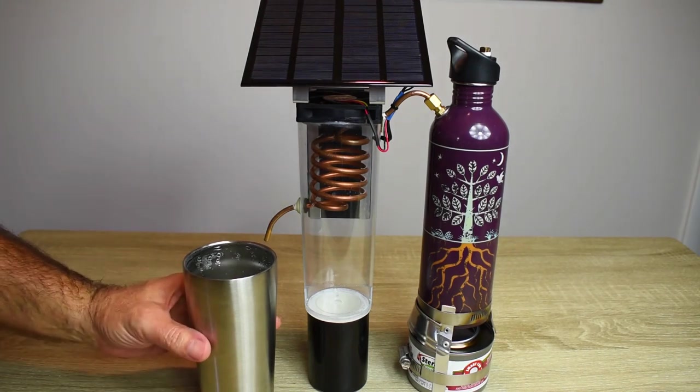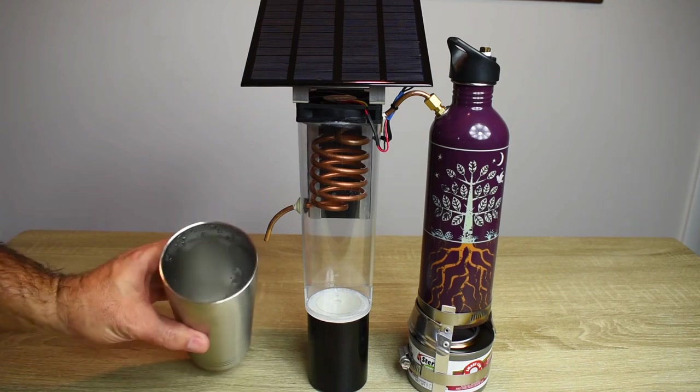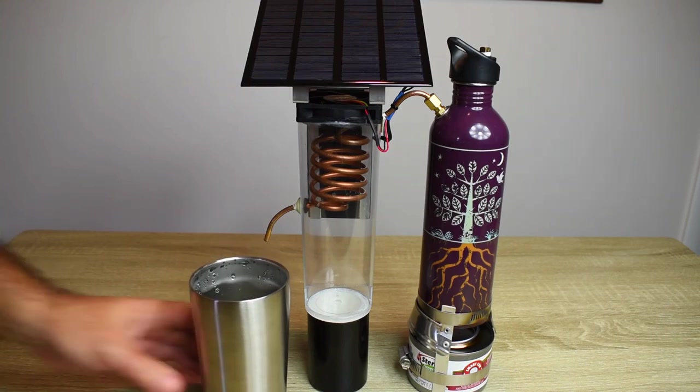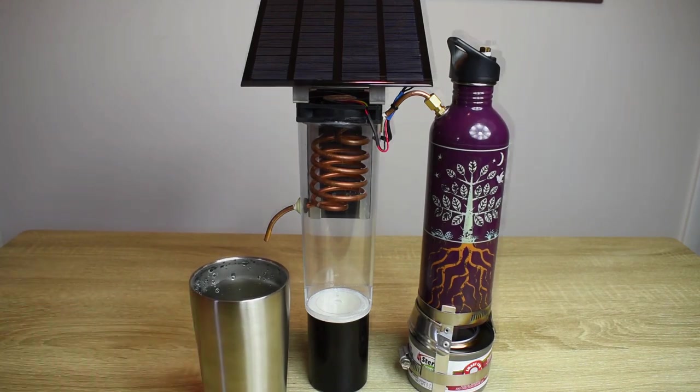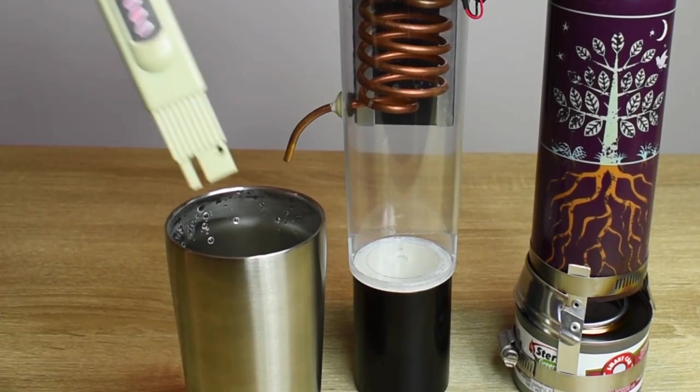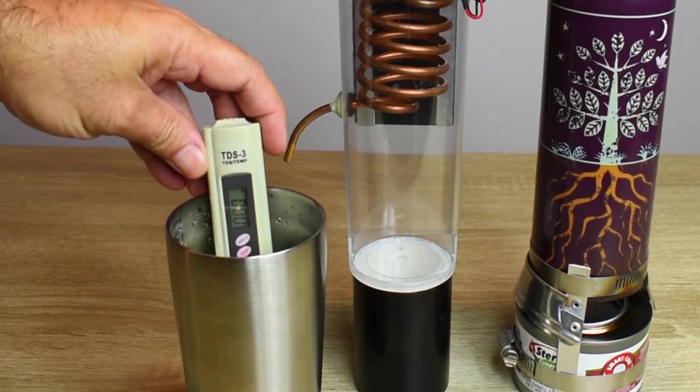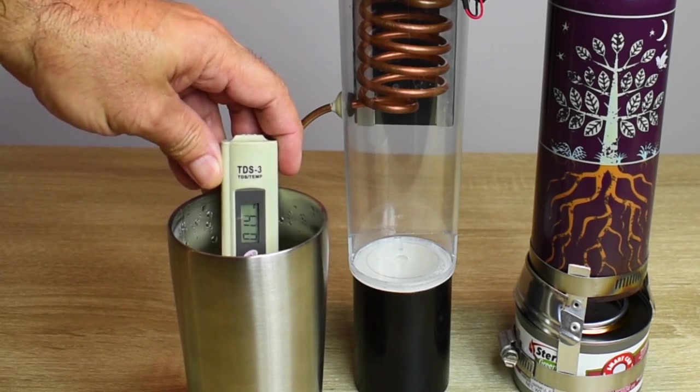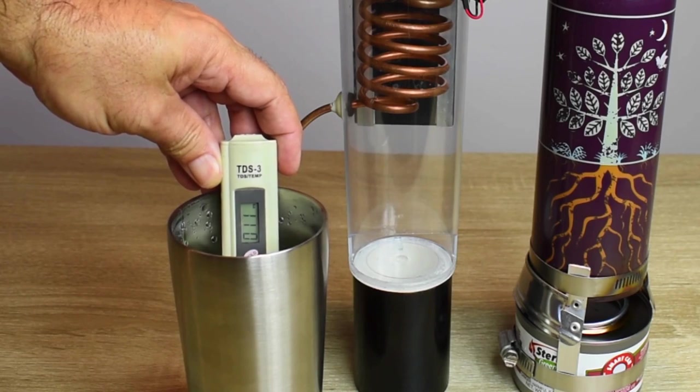You can see it's sloshing around. I'm going to let this cool down for a couple of minutes, and then take a TDS measurement. And, as you can see, the TDS is right around 11 or 12. That's a huge drop from the seawater.